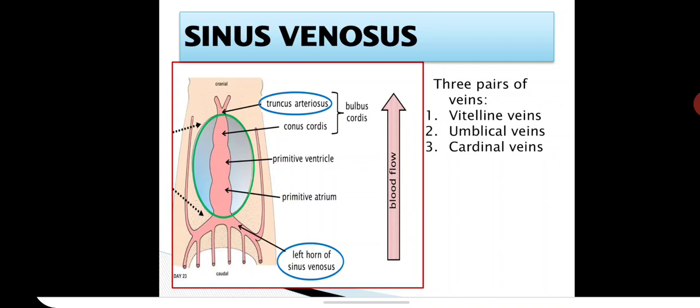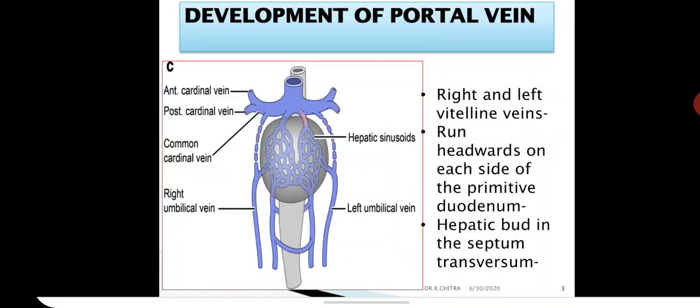This we have seen in the development of the cardiovascular system. Try to watch those three parts of the cardiovascular system development — it will be easy for you to understand the development of the pharyngeal arch arteries or the veins of the body. Now we will start with the development of the portal vein.